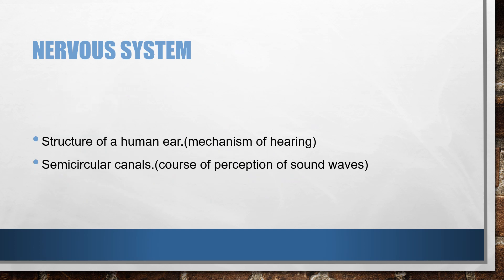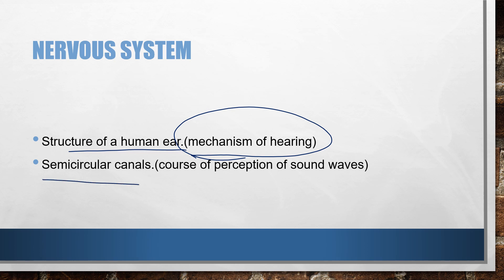Next comes the structure of the human ear. In sense organs, first was the eye and second is the ear. The mechanism of hearing can be shown with a labeled diagram. Next comes the semicircular canals and the course of perception of sound waves. These are all important diagrams of the nervous system.